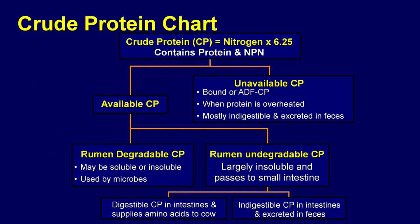Crude protein is nitrogen multiplied by 6.25. Crude protein contains true protein and non-protein nitrogen. Crude protein can be partitioned into available crude protein and unavailable crude protein. The unavailable crude protein is the crude protein bound to the acid detergent fiber and it increases when protein is overheated. Unavailable crude protein is mostly undigestible and is excreted in the feces.